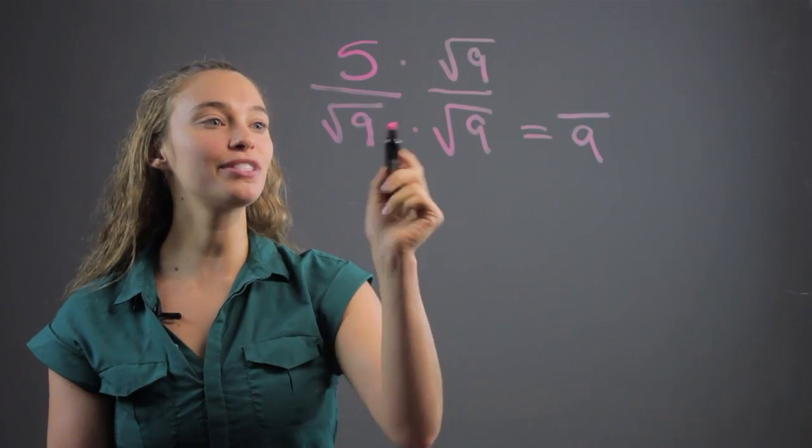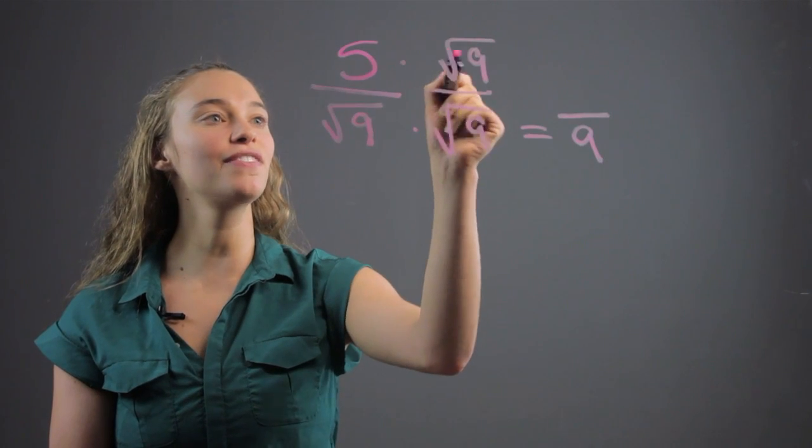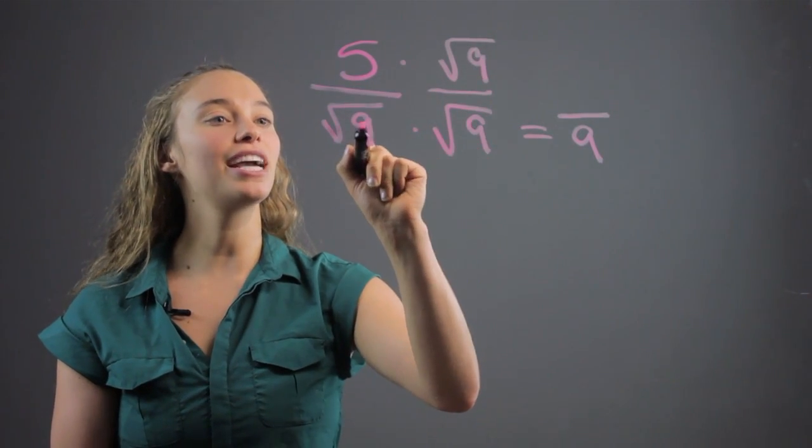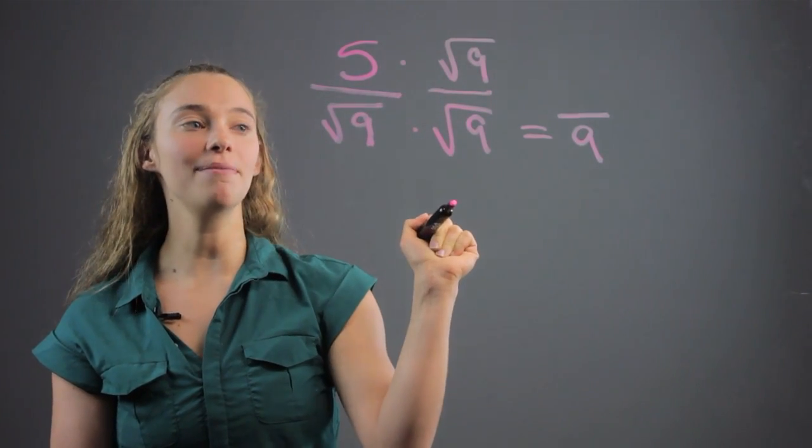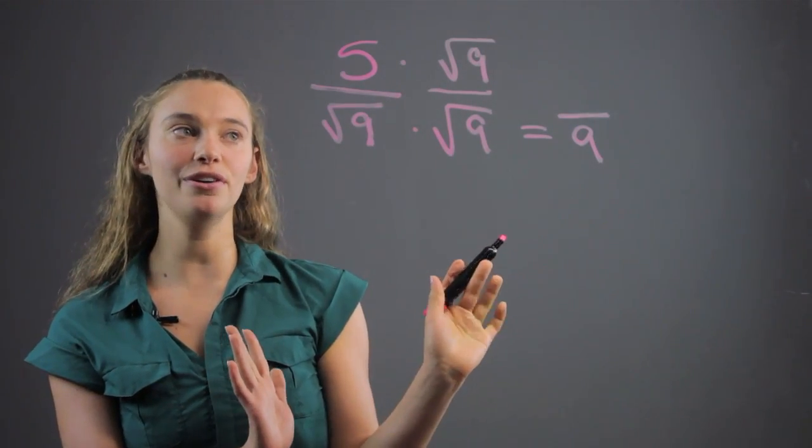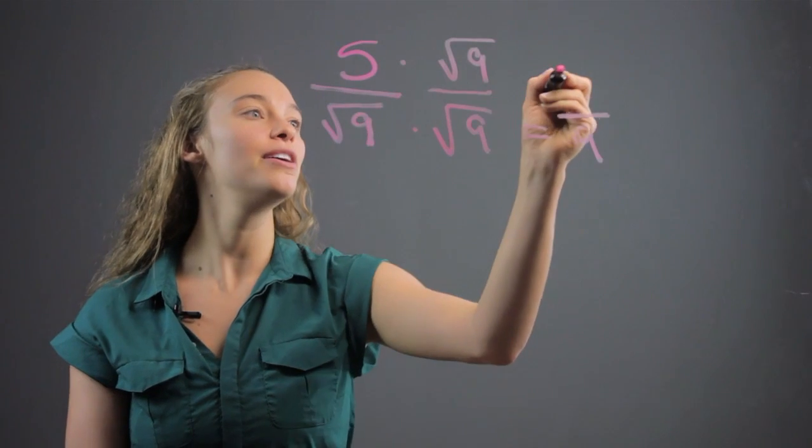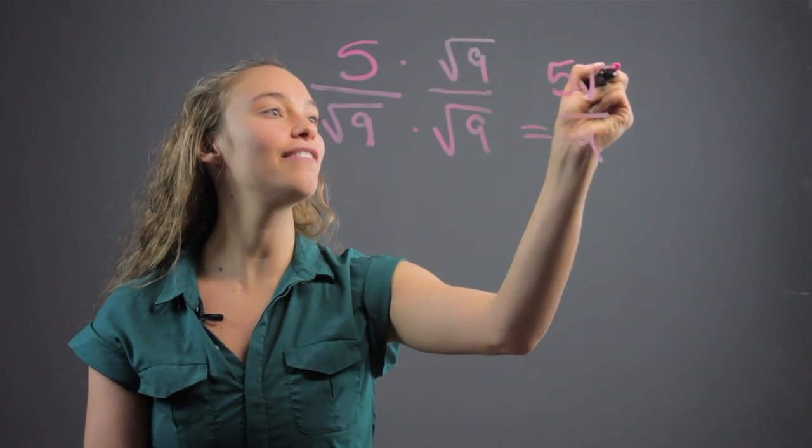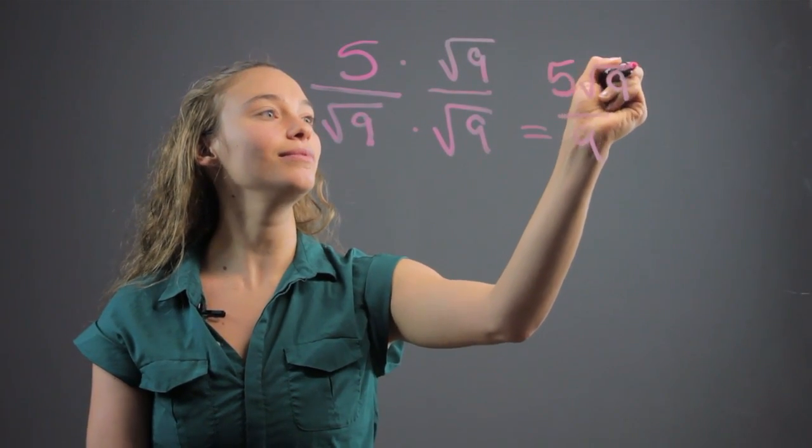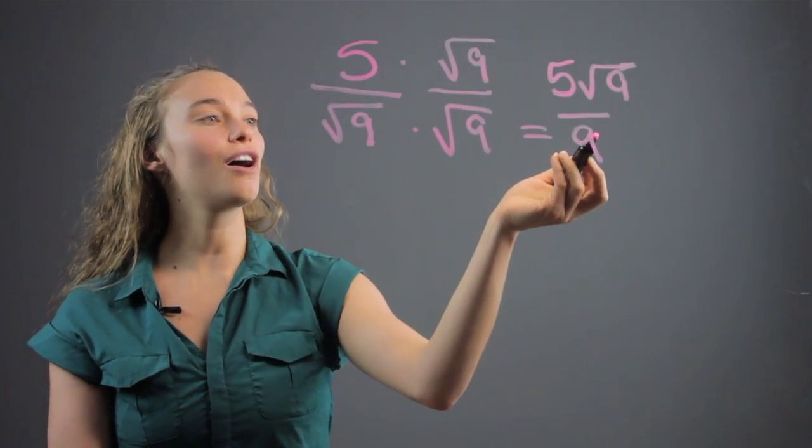So by the rules of math, we can multiply this by the square root of 9 over the square root of 9. We get 9 on the bottom, which is great, no more square root. And now we have 5 times the square root of 9 on the top, which we just write as 5 root of 9. And now we've solved for it.